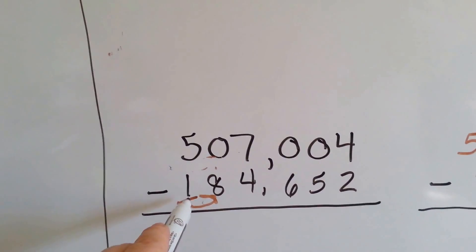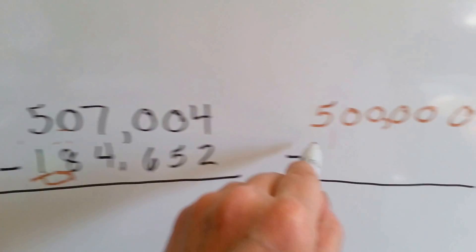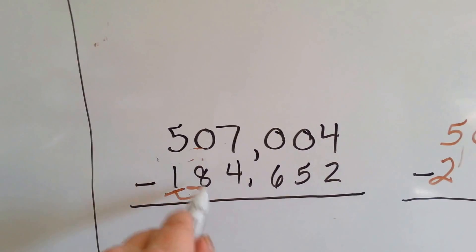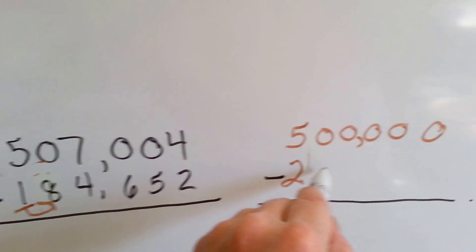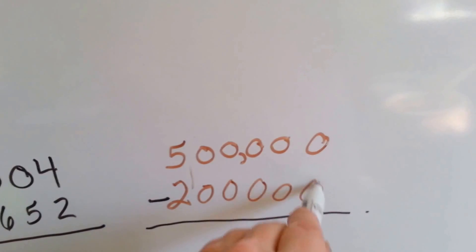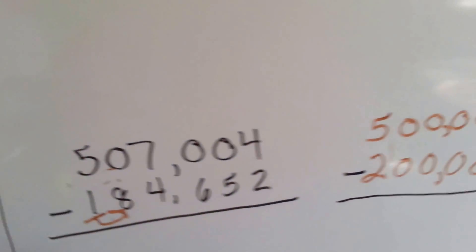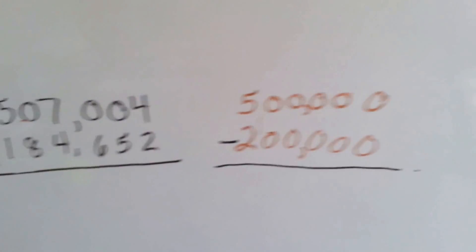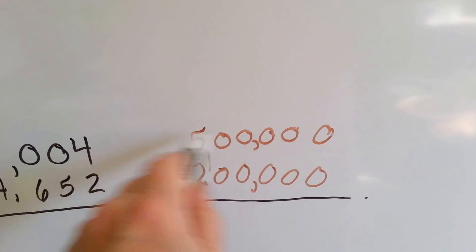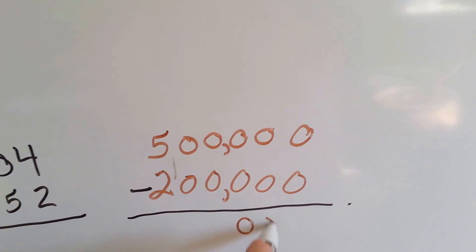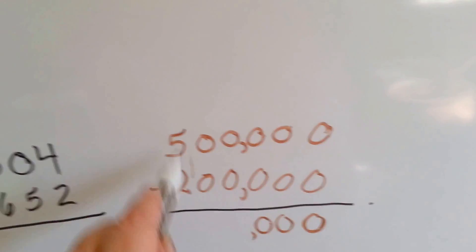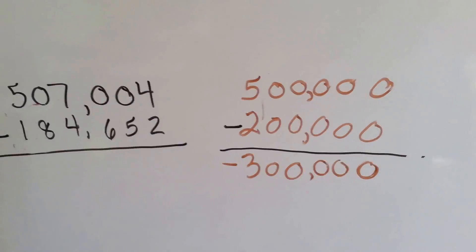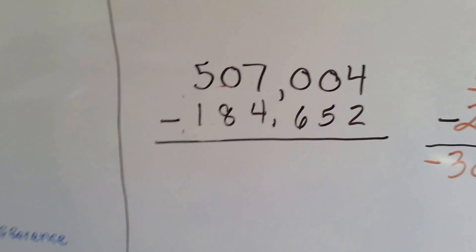And then it becomes a 0, and so do all these. We have 1, 2, 3, 4, 5 zeros. Put our comma in. Let's get rid of our messy brown here. All right, so now let's do our subtraction. 500,000 take away 200,000. 5 take away 2 is 3, isn't it? So, that's our estimated answer, 300,000. Now, let's do our real one.